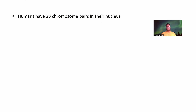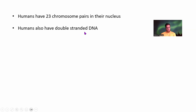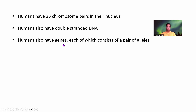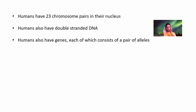Let's think about a few things. Humans have 23 chromosome pairs in their nucleus and also have double-stranded DNA. But how do these 23 chromosome pairs relate to double-stranded DNA? Are they the same thing? Humans also have genes, each of which consists of a pair of alleles. So now more confusion — pair of chromosomes, double-stranded DNA, and pair of alleles. How do they exactly relate?